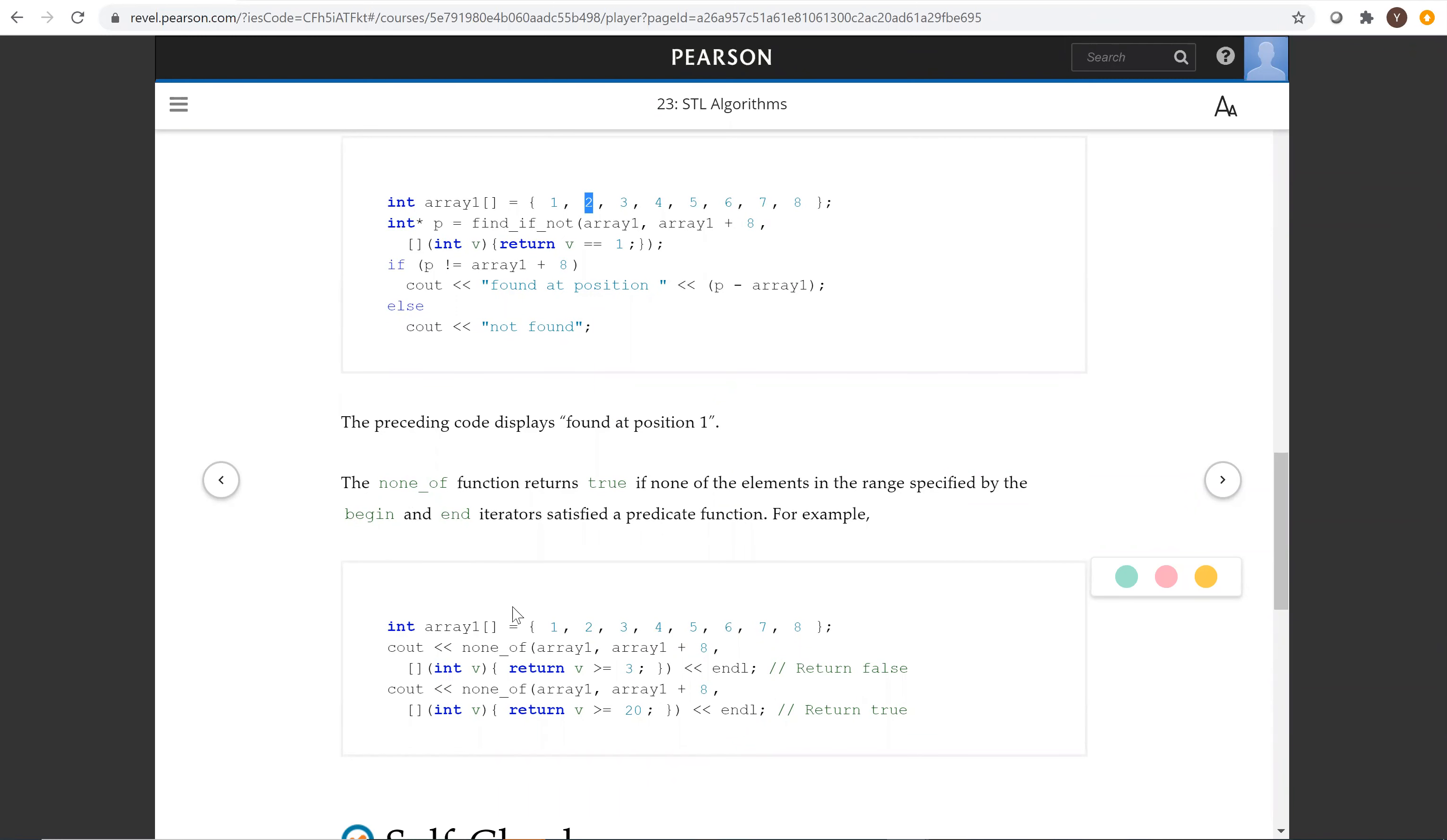NoneOf checks if none of the elements satisfy the condition. Here with noneOf and the entire sequence, is any element greater than or equal to three? NoneOf returns false. Is it greater than or equal to 20? NoneOf returns true.